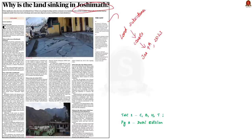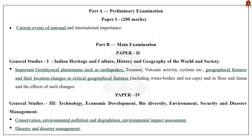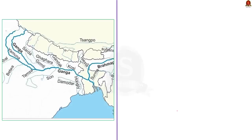In that video, we covered holistically about land subsidence, so I recommend you all to first watch that video before coming to this discussion. Let us see the location of Joshimath. Uttarakhand is one of the hilly states present in India. It is also the source of two important rivers, Ganga and Yamuna. These two rivers start their journey towards the Bay of Bengal from this state only.